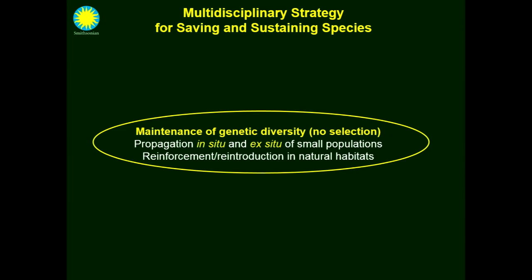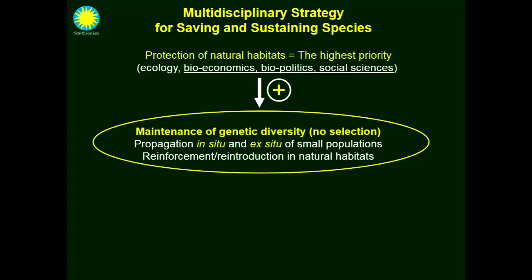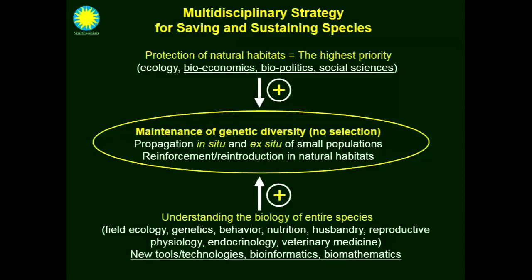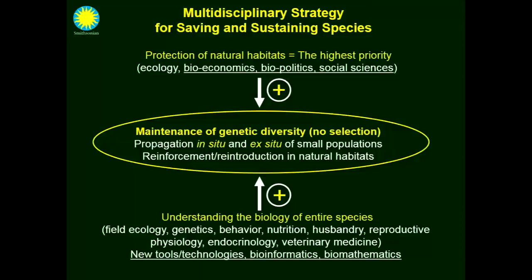The priority number one is really the protection of the natural habitat. It's already a complex task involving a lot of different disciplines. On the other side of the spectrum, you have the need to understand the basic biology of those different species. This is a really multi-disciplinary approach including veterinary medicine and other areas like ecology or genetics. We now have more and more tools to help accumulate basic knowledge about the species.